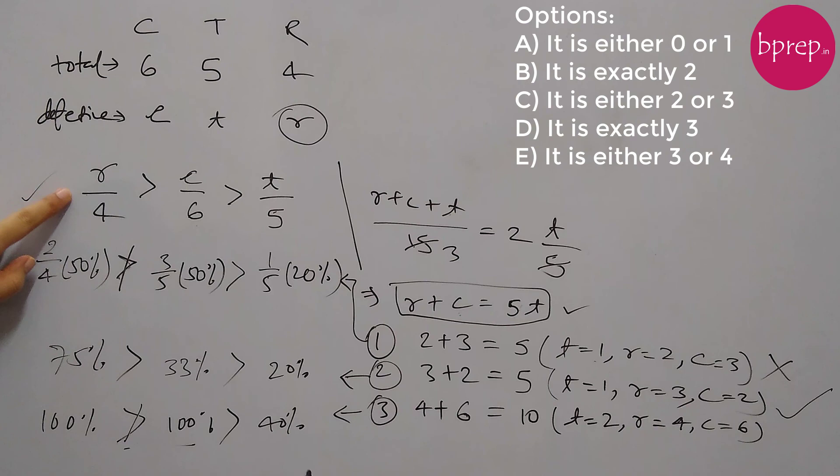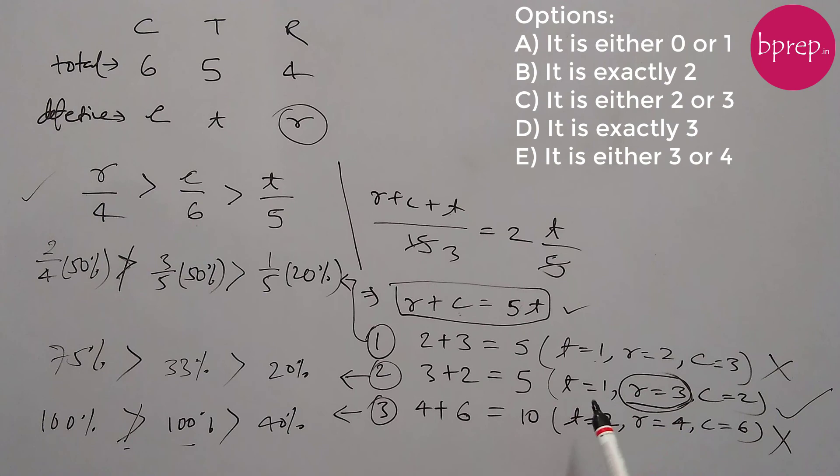So the only possible set is t equals 1, r equals 3, c equals 2. From this set, the value of r is exactly 3. The correct answer is that the number of defective rubber balls should be exactly 3 — it cannot be 2, 4, or any other value.